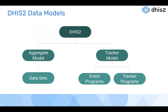As we all know about the DHIS2 data models, DHIS2 primarily has two main data models: one for aggregate data collection and one for tracker data collection. Datasets are used for collecting aggregate data from health facilities on a fixed frequency, whereas within the tracker model, we have two kinds of programs — event programs and tracker programs.